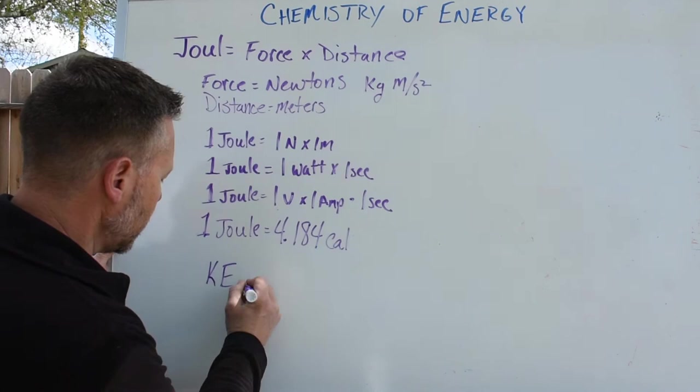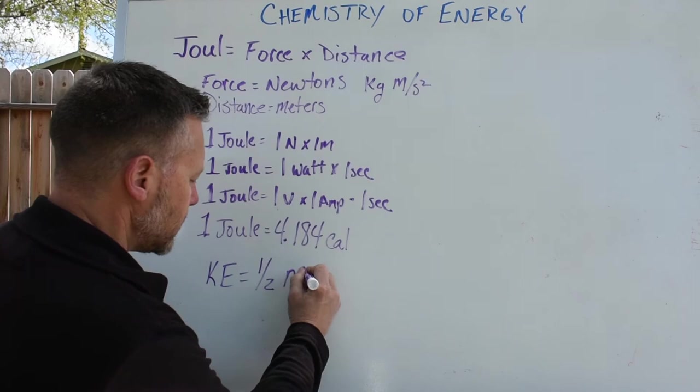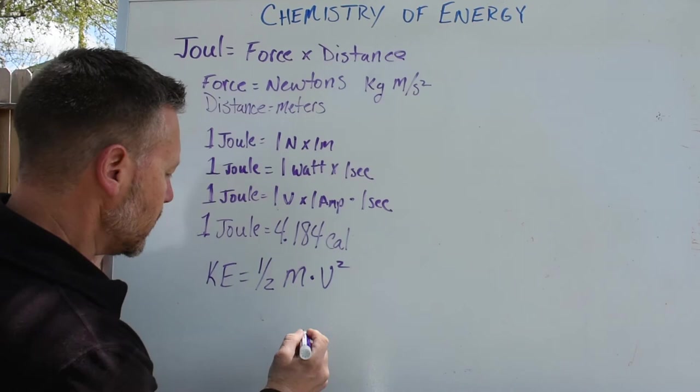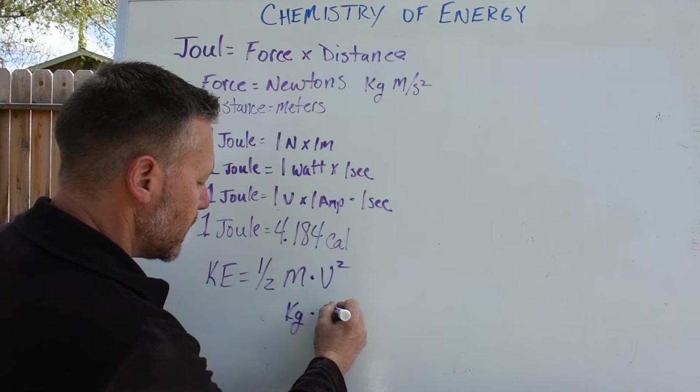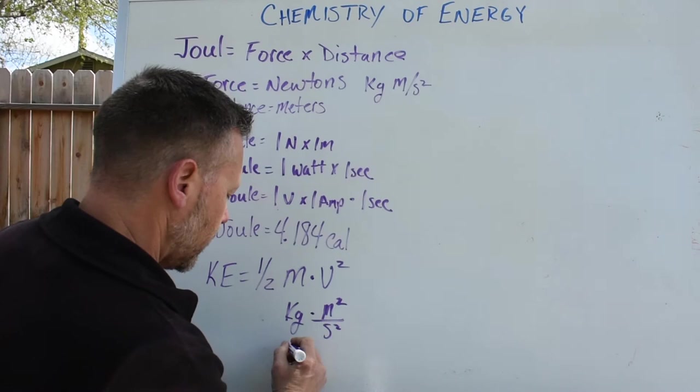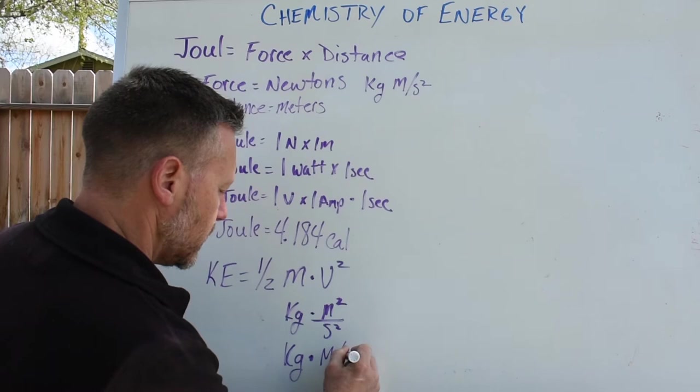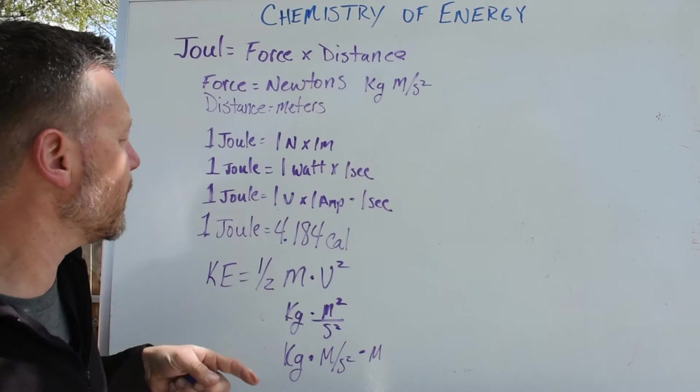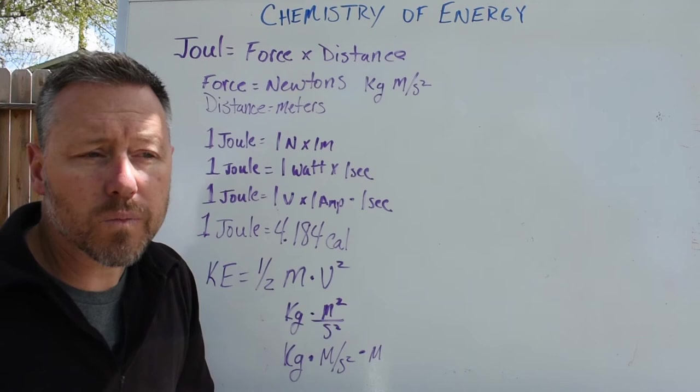So kinetic energy is equal to one half mass times velocity squared. Now let's look at the units for that just a little bit more. So mass is in kilograms and velocity squared is meters squared over seconds squared. We can also look at that as kilograms times meters per second squared times meters again. And we end up with the same sort of thing right back here at the top, the same idea of joules over and over again.